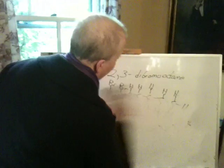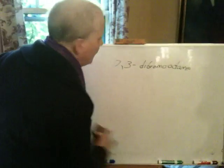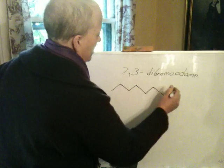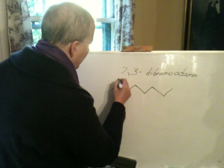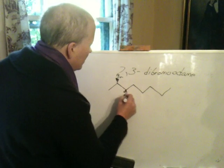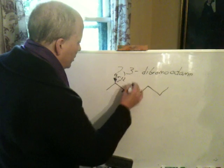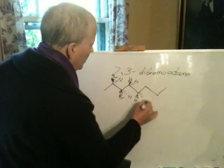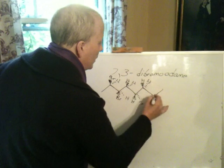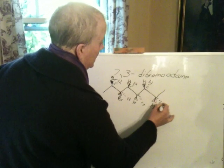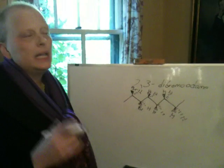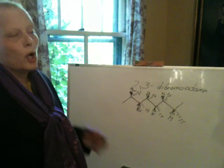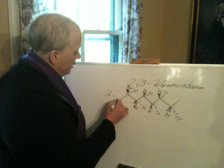What else could you do? You could draw it as a Fisher projection or as a wedge and hash. So if I drew it as a wedge and hash, I would draw my line like this, take my bromine and put it out as a wedge, put this bromine back. Some students like to practice putting all their hydrogens in — this is a great thing for you to do. I could put H, H in on this, I could put an H in like that. This is what I mean about practicing.